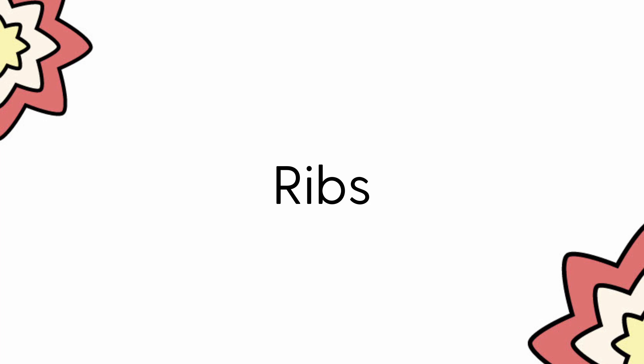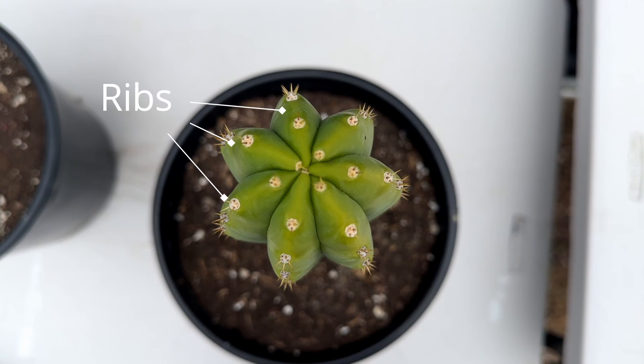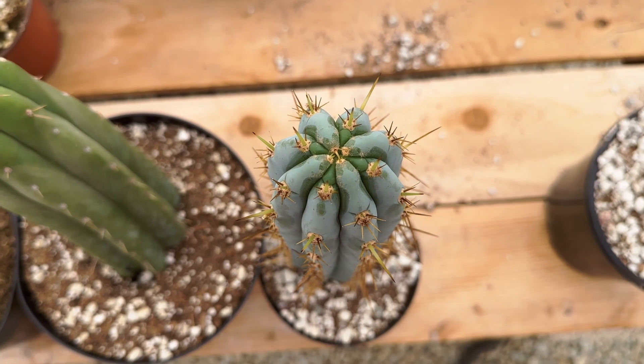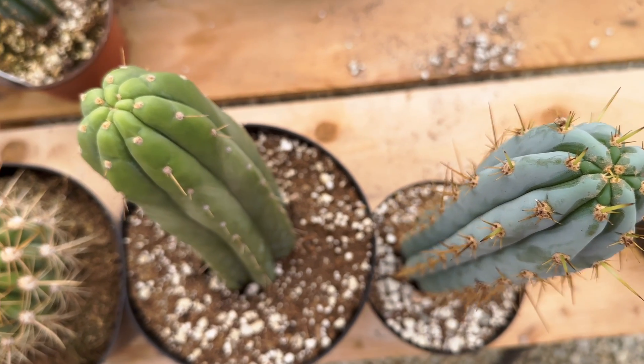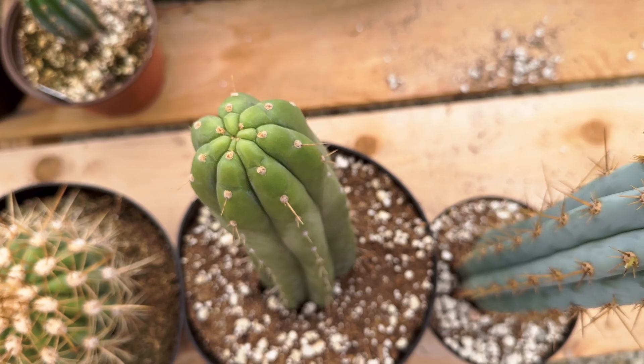The ribs are vertical lines along the stem, helping in the cactus's growth and adding a unique visual pattern. Some varieties of San Pedro cacti may have more or fewer ribs than others.